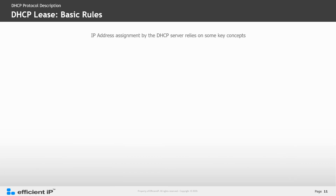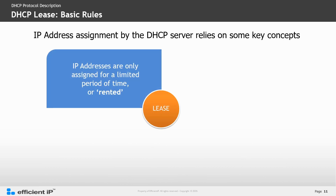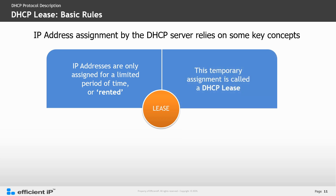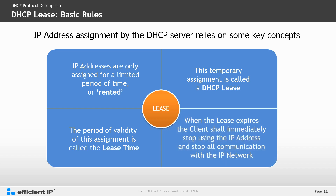The IP address assignment by the DHCP server relies on some key concepts. IP addresses are only assigned for a limited period of time, like being rented. This temporary assignment is called the DHCP lease. The period that the IP address is valid for is called the lease time. When the lease expires, the client shall immediately stop using that IP address and stop all communication with that IP network.